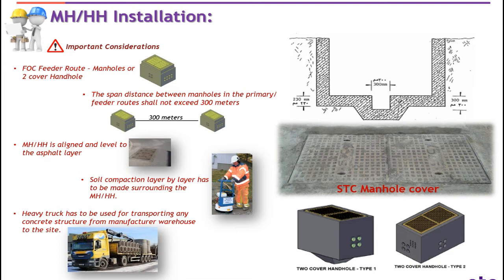Number ten: soil compaction layer by layer has to be made surrounding the mini manhole or handhole. Number eleven: a heavy truck has to be used for transporting any concrete structure from the manufactured warehouse to the site. In a diagram below it shows the cross section of mini manhole or handhole and you can see the thickness of the wall.